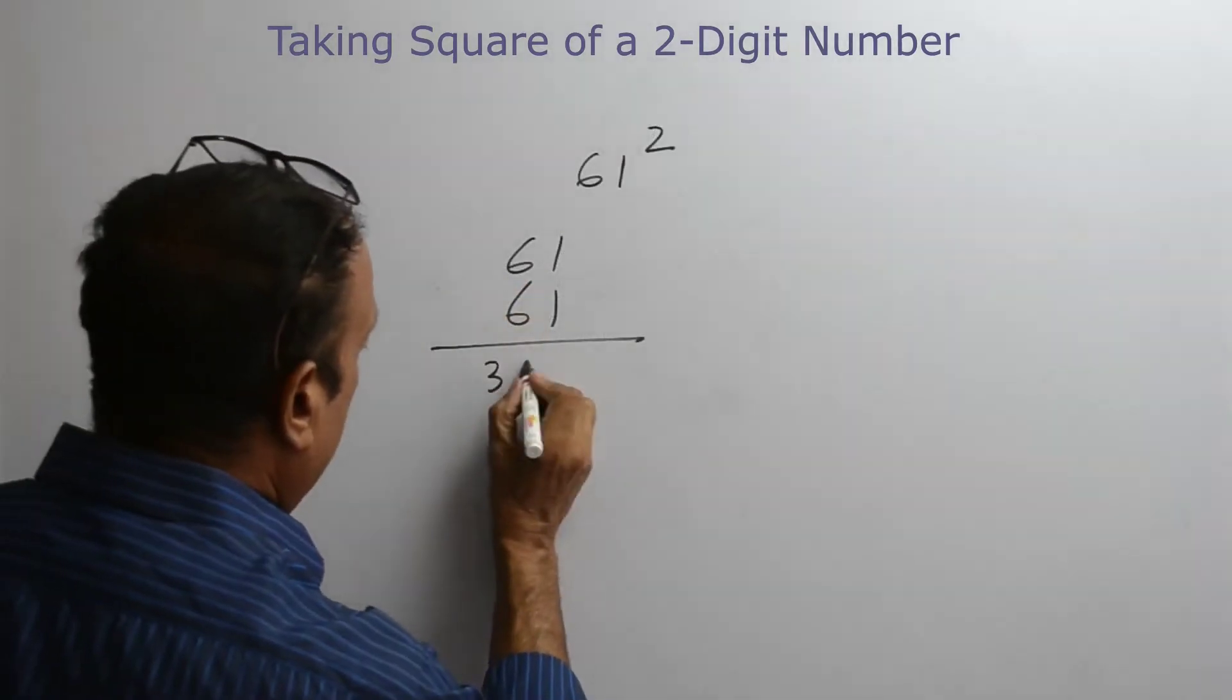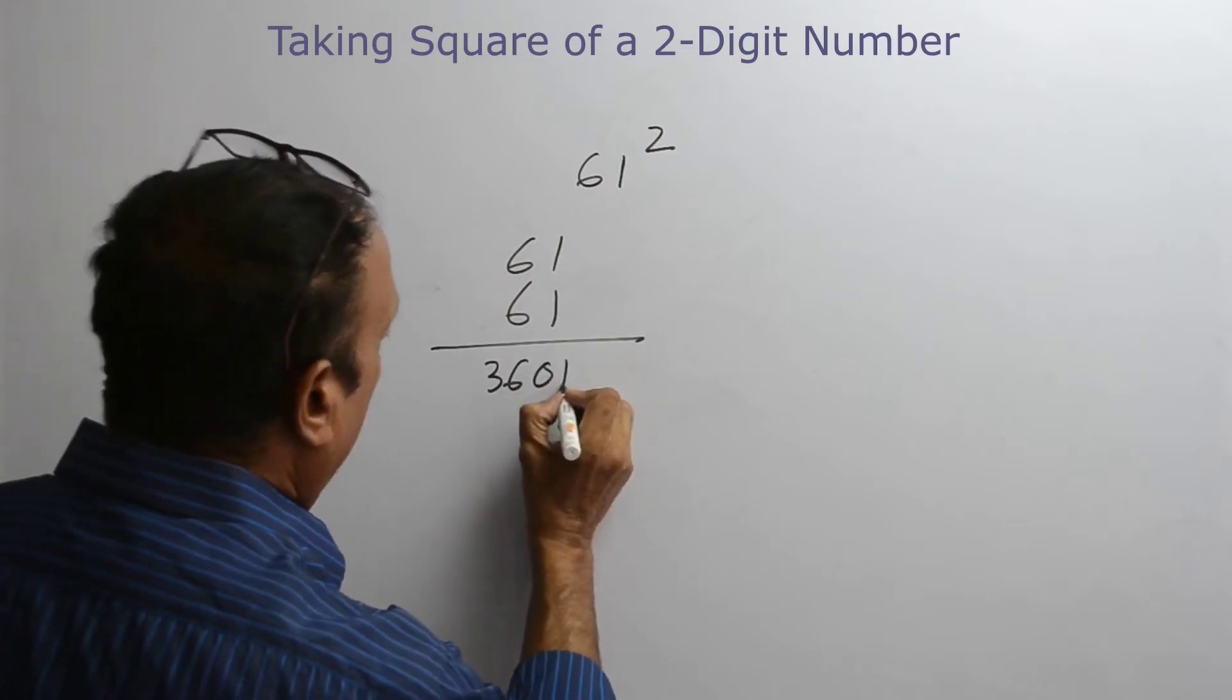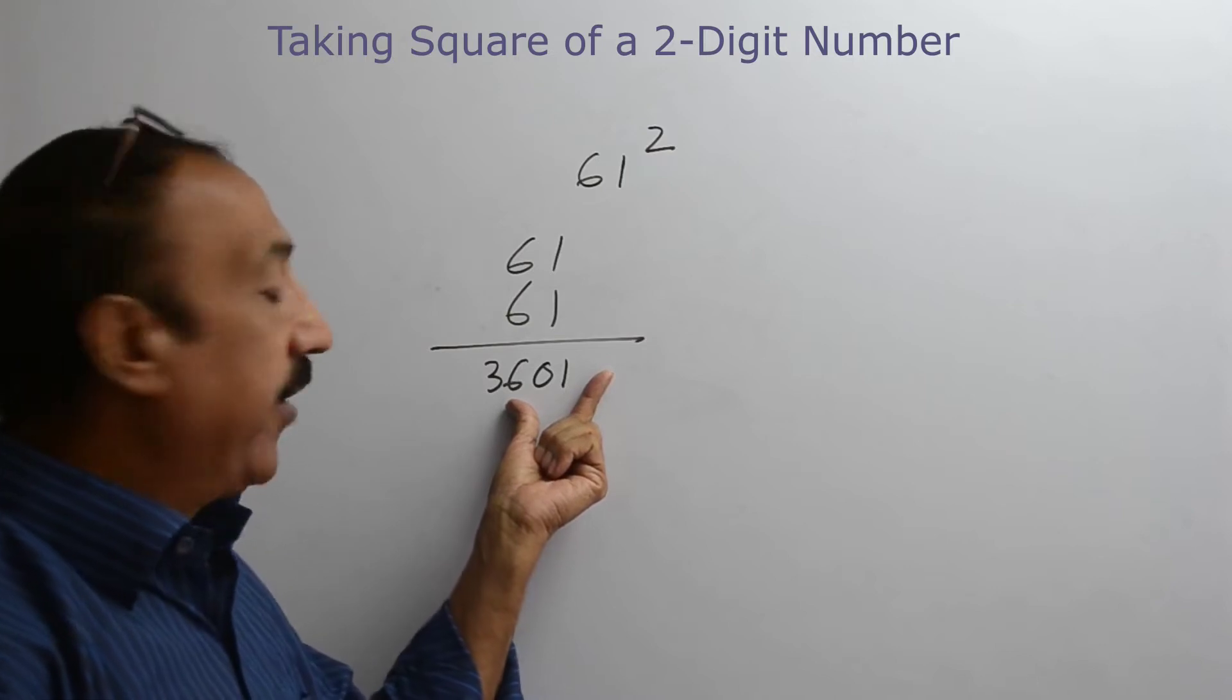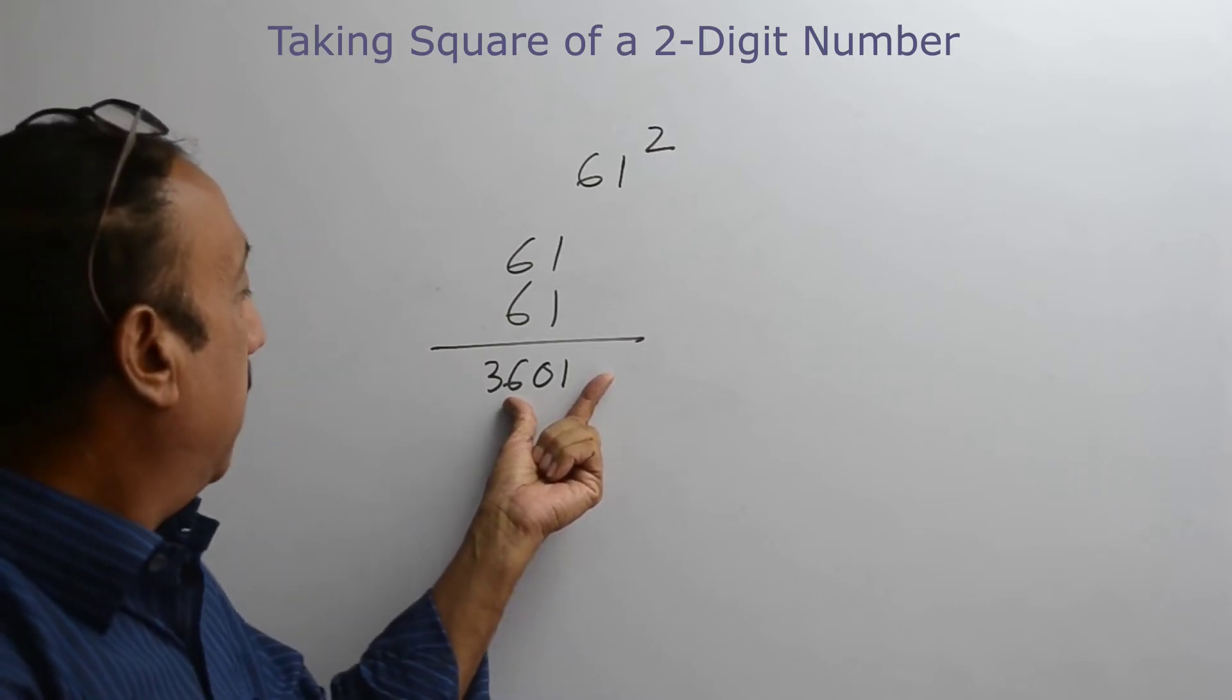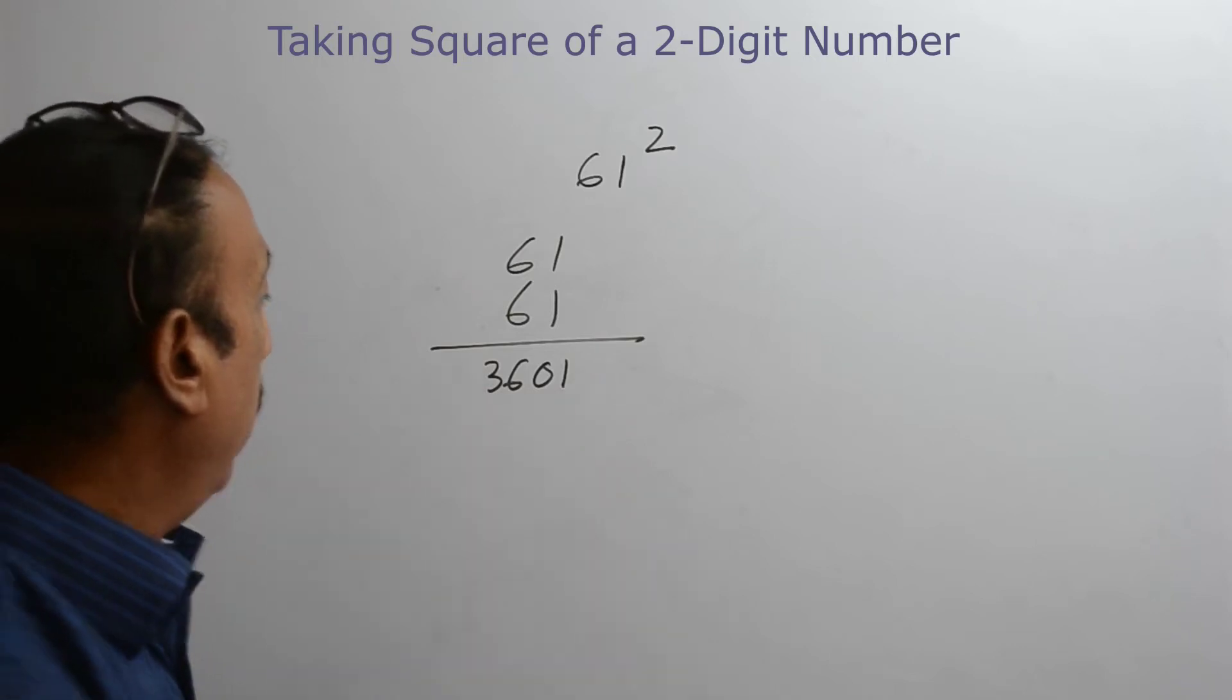6 multiplied by 6 is 36. 1 multiplied by 1 is 01. Please note that we will not take a 1 digit number. If we got a 1 digit number, we will be making it a 2 digit number by prefixing 0 before it.